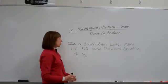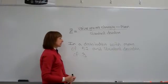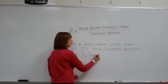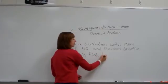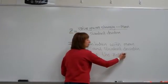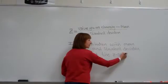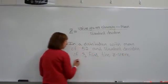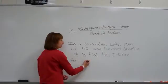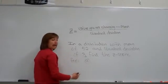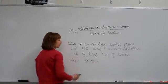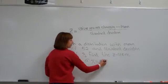In a distribution with a mean of 52 and a standard deviation of 3, find the z-score — sometimes called the standardized score. The first one I want to do is if we have a raw score x equal to 55.